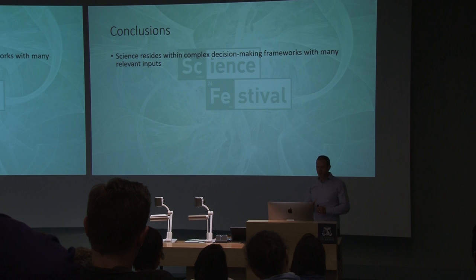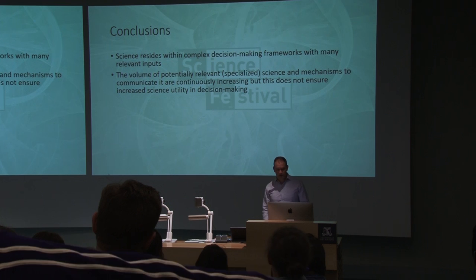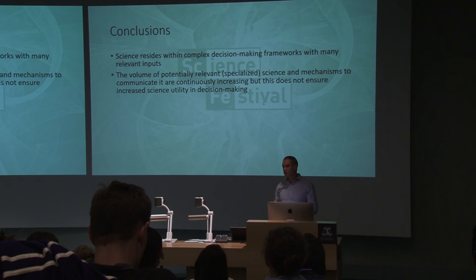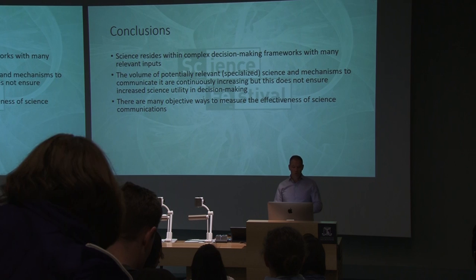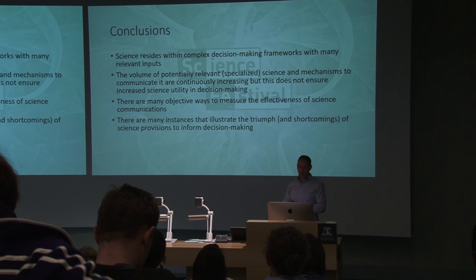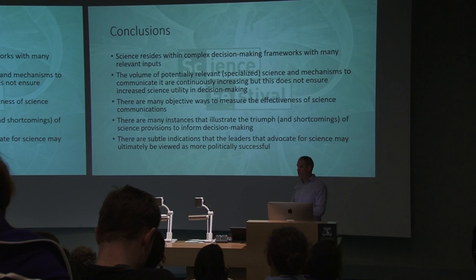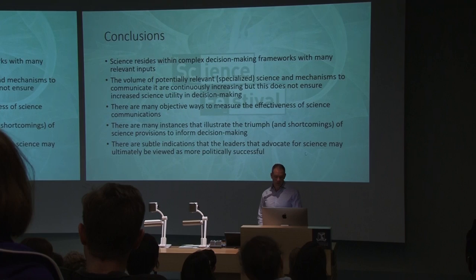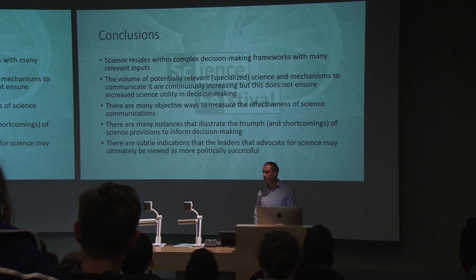Science resides within these really complex decision-making frameworks. There's so much to consider. It's very challenging. The volume of potentially relevant science and mechanisms to communicate it are continuously increasing, but this does not ensure increased science utility in decision-making. There are so many avenues for us now to communicate science, but we still have decision-makers that don't often understand or use science perhaps as well as they could. There are a whole bunch of ways, objectively, that we can measure the effectiveness of science communications. There are instances that illustrate the triumph and the shortcomings of science provisions to inform decision-making, informed by case studies largely, and there are very subtle, provocative — and perhaps wrong, but hopefully going in the right direction — indications that the leaders that advocate for science may ultimately be viewed as more politically successful. Appealing to that narcissistic element might be the way.